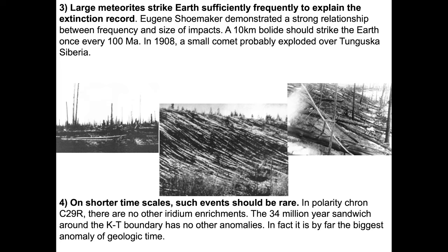In 1908, there was probably a small comet that exploded over Tunguska, Siberia, causing the damage seen in those images — taken in around 1927, long after 1908, when people finally got into this really remote region of Siberia. They took photos and looked for bits and pieces of whatever hit the Earth. They haven't found it yet, but they're still looking. On shorter timescales, events like these should be rare. In polarity cron C29r, there are no other iridium enrichments. The 35-million-year period around the KPG boundary has no other anomalies.